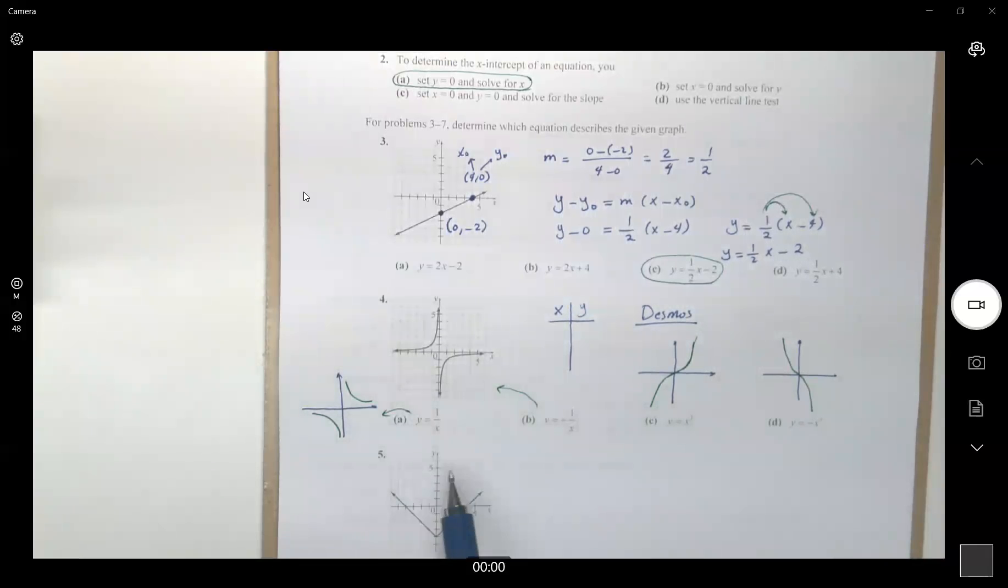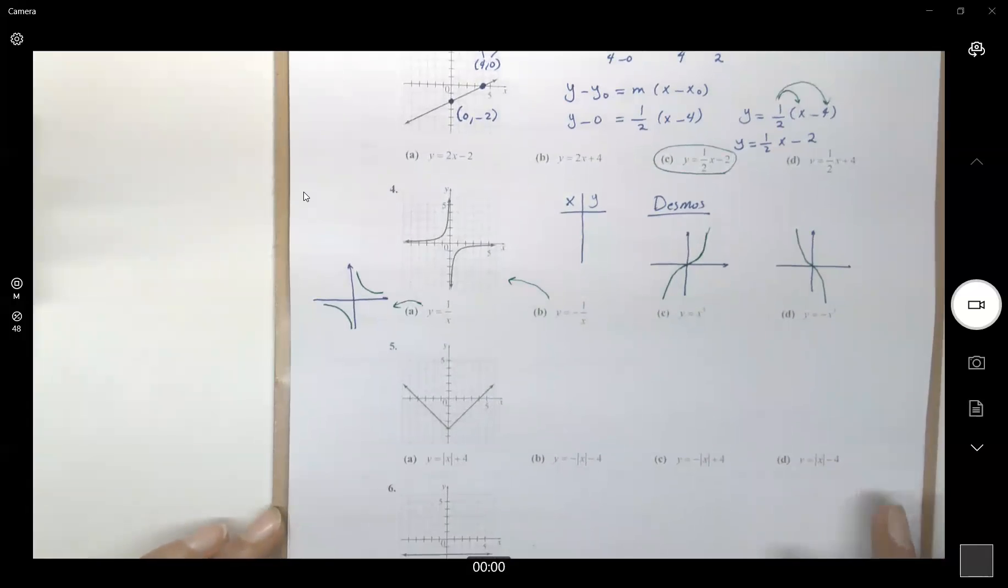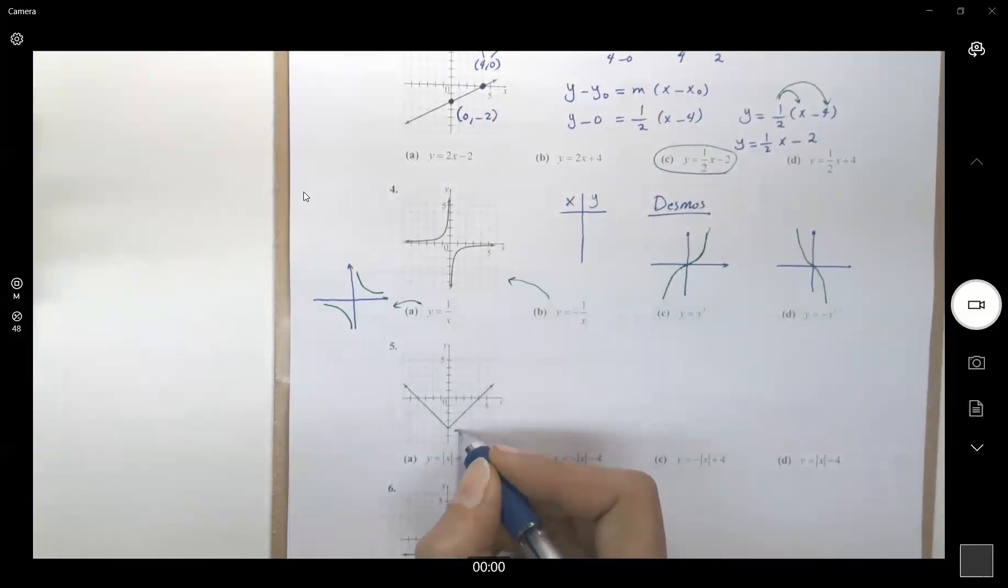Very well. So here we have, for question 5, they have absolute value shape. But we shifted this graph 4 units, 1, 2, 3, 4 units downward. It means that the y-intercept is at negative 4.